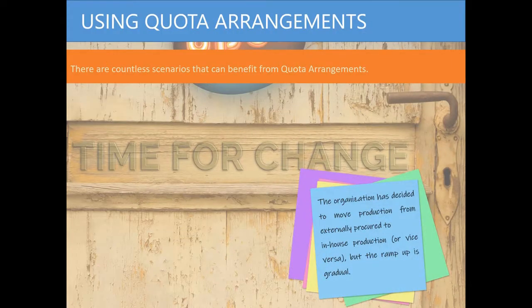Or perhaps your organization has decided to outsource a material to an external supplier instead of manufacturing that material in-house, or perhaps vice versa. These types of changes are rarely cut in all at once. In other words, the changeover is gradual. While the change is taking place, you may need to plan to procure some of the goods from an external source while continuing to manufacture a portion in-house.